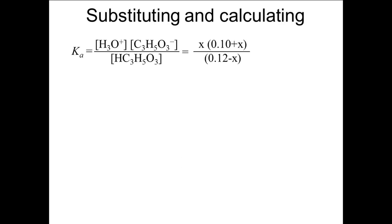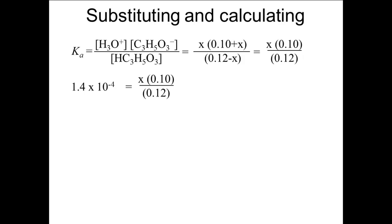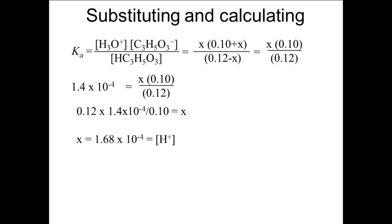Substituting into the equilibrium expression, we get Ka equals X times (0.10 plus X) divided by (0.12 minus X). We can assume that X can be ignored in both terms, which simplifies the expression substantially. The expression becomes 1.4 times 10 to the minus 4th equals X times 0.10 divided by 0.12. Solving for X, we get X equals 1.68 times 10 to the minus 4th. Since X is the concentration of H+, the pH of the buffer is 3.77. A quick check shows that the percent dissociation is 0.14%, so the approximation of ignoring X is excellent.